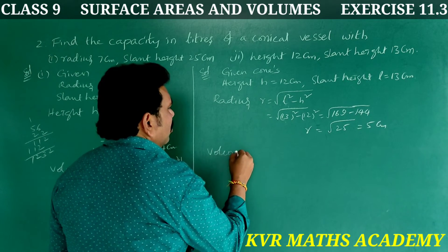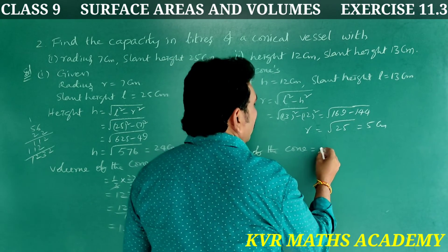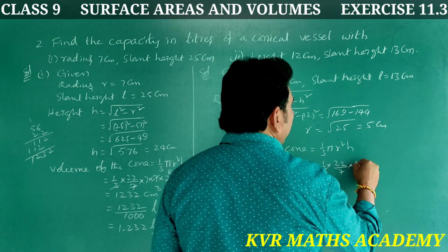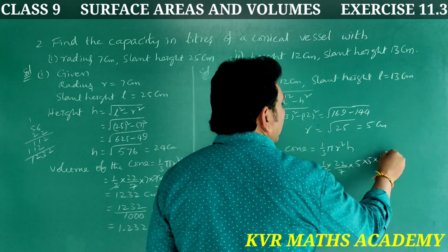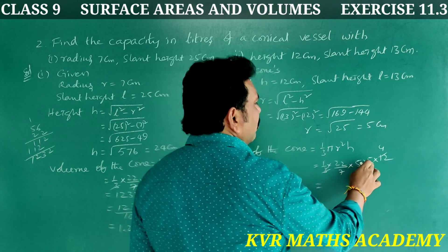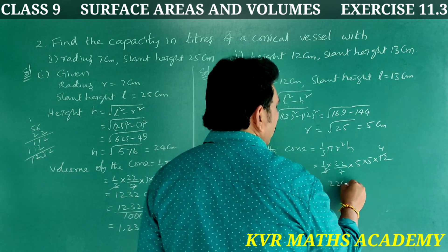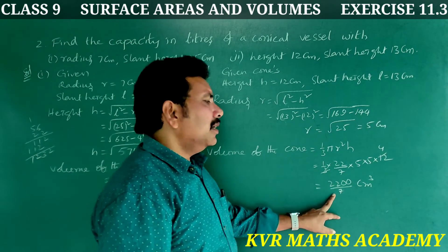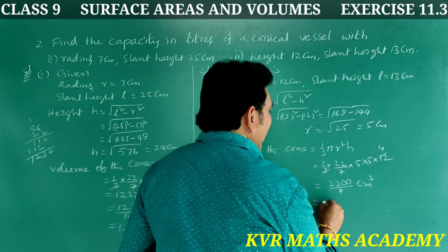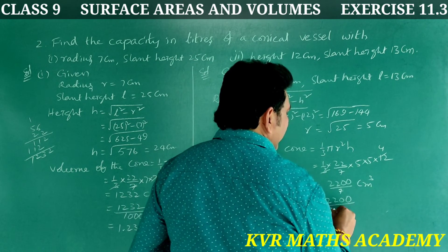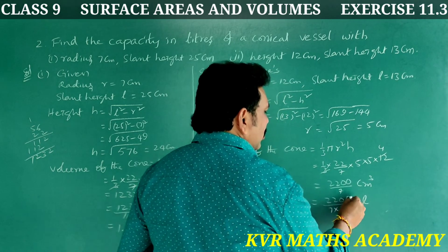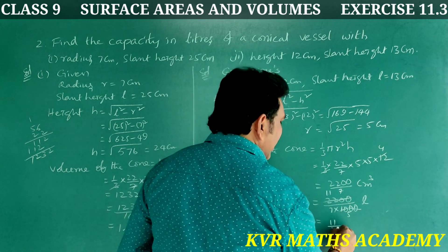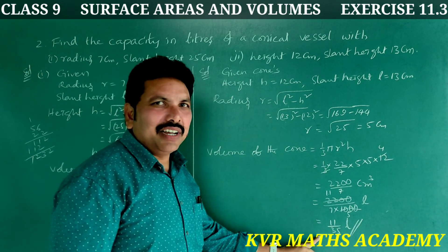Volume of the cone = (1/3)πr²h = (1/3) × (22/7) × 5 × 5 × 12. 3 into 12 gives 4, and 4 × 25 = 100, so volume = 2200/7 cm³. Converting to liters by dividing by 1000 gives 2200/7000 = 11/35 liters. Have you understood clearly? Yes, note it down.